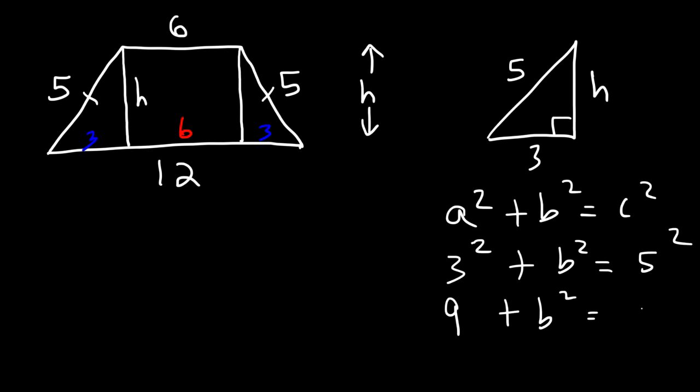B is the height, and C is 5. 3 squared is 9. 5 squared is 25. And 25 minus 9 is 16. Now to find B, we need to take the square root of 16, which is 4. So 4 is the height of the trapezoid. Now that we have the height of the trapezoid, we can go ahead and use the formula to get the answer.